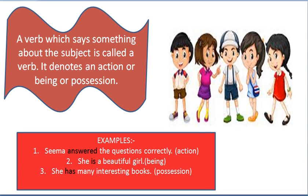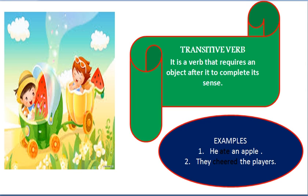Verbs are of two types: transitive verb and intransitive verb. Transitive verbs are verbs which require an object after them to complete their sense. Like 'he ate' — if we say 'he ate,' we don't have an object. What did he eat? He ate an apple. So this becomes a transitive verb because it has an object.